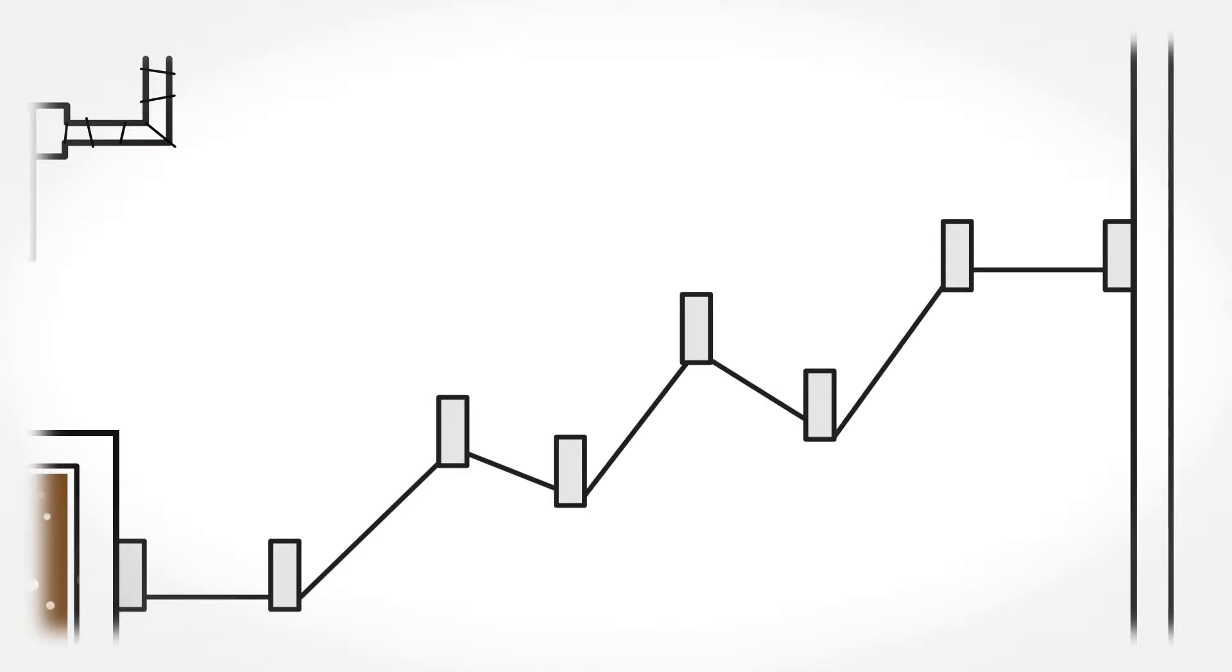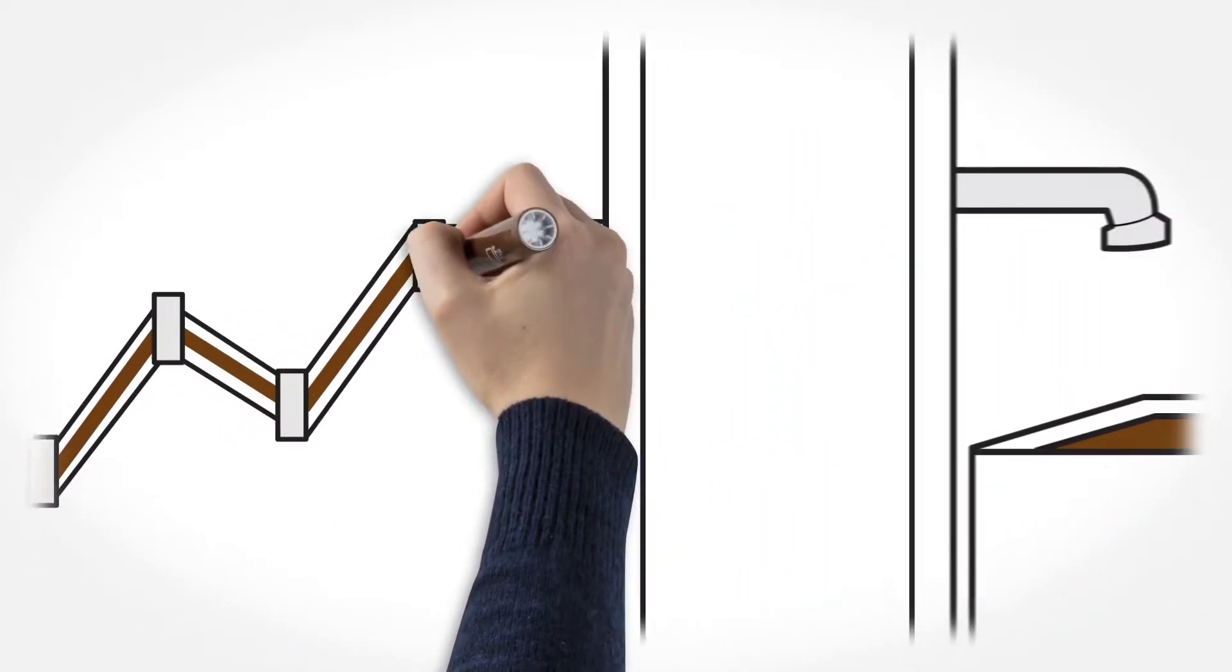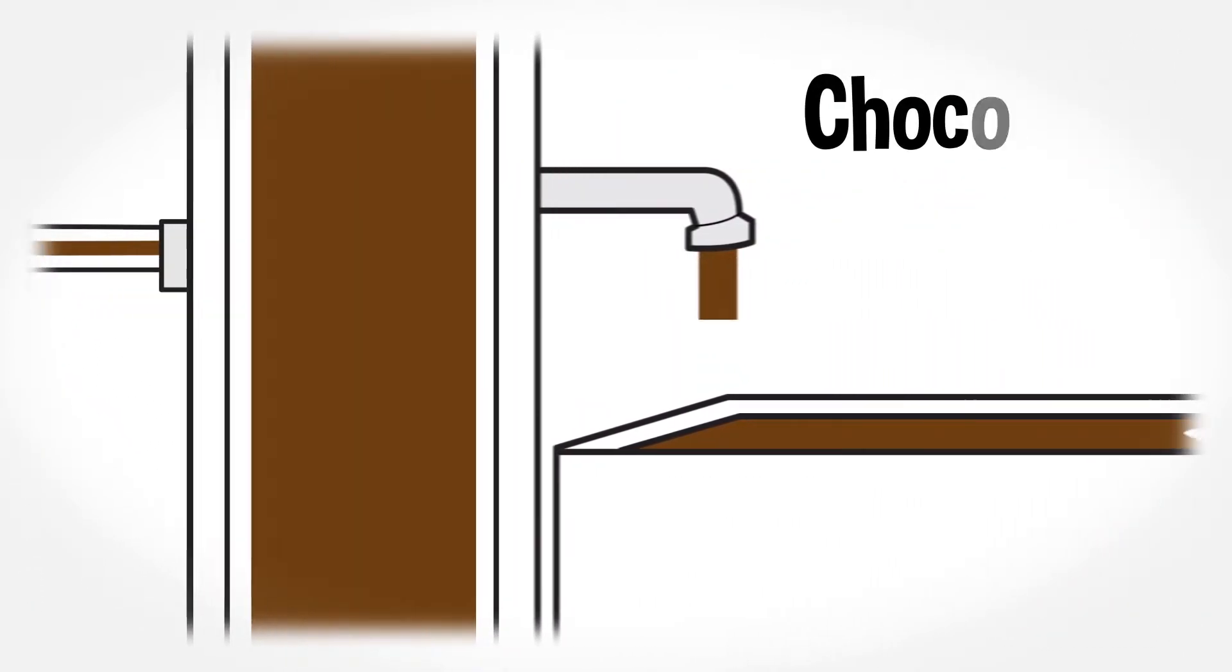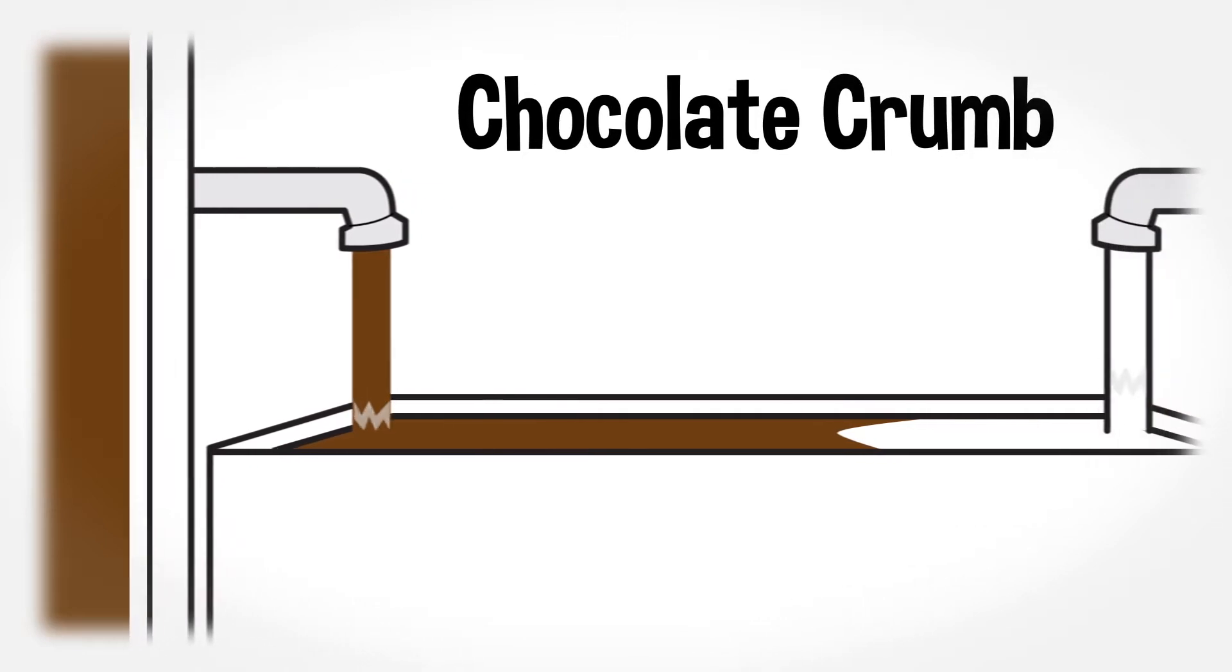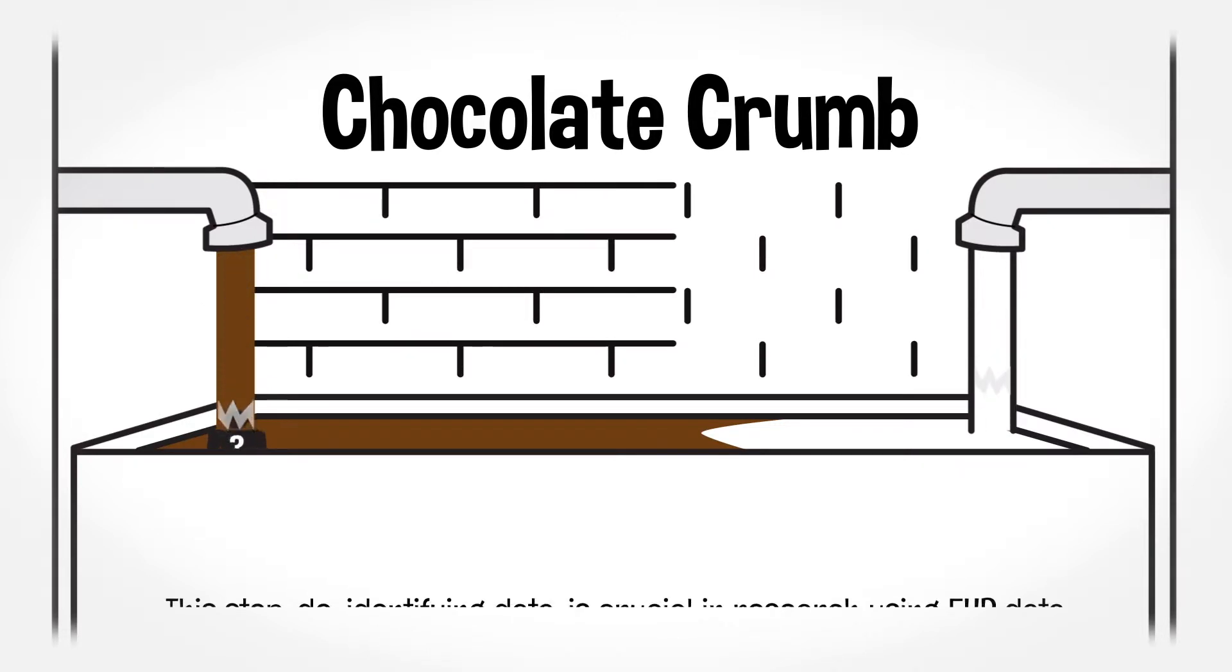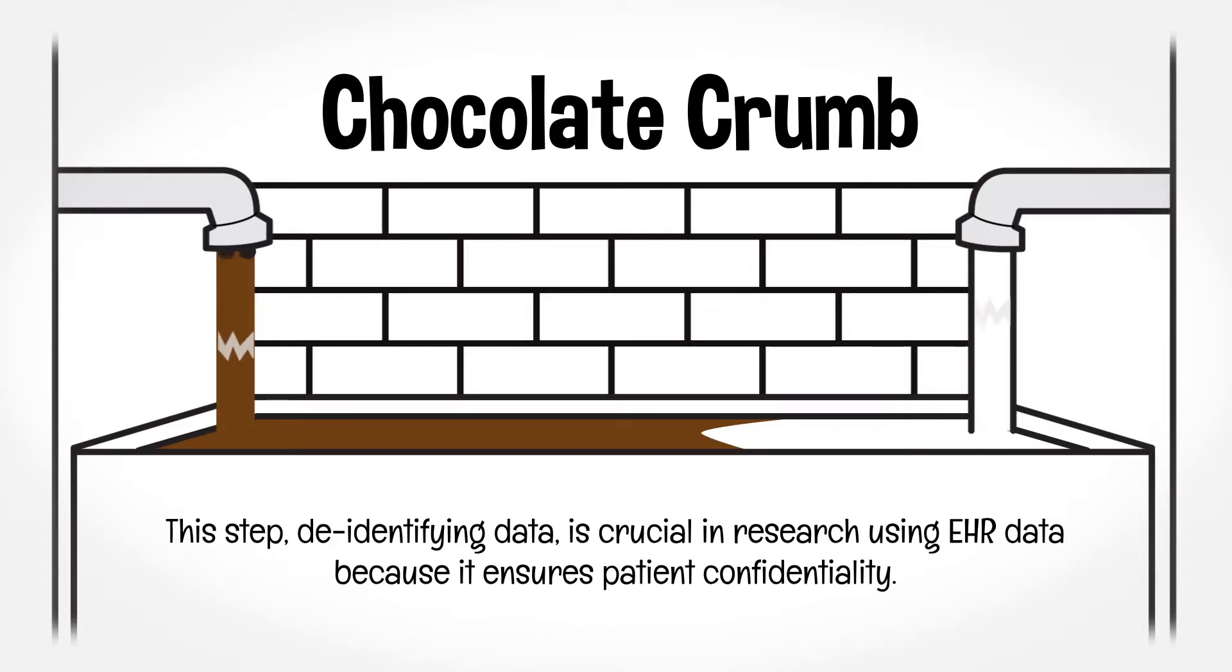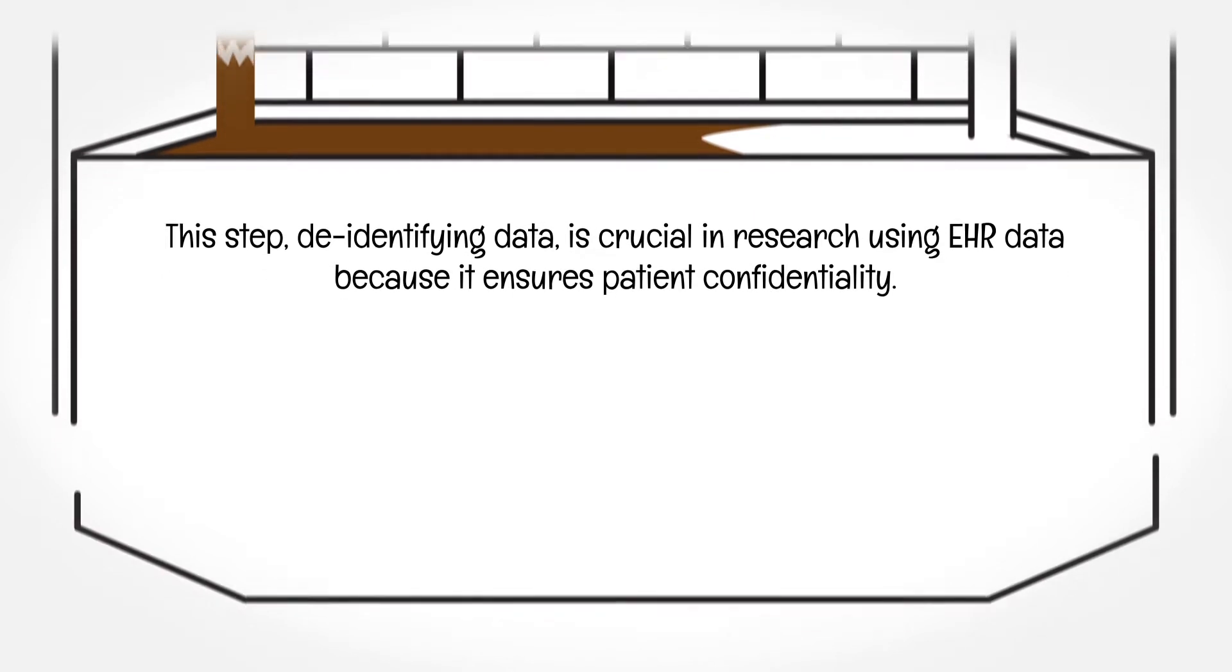Chocolate liqueur is next combined with milk and sugar to form chocolate crumb. Once the crumb is formed, there's no way to separate the individual nibs or, in our analogy, patients' EHRs. This makes it impossible to connect health information with a patient's identity before the data is stored and protected behind each network institution's firewall. This step, de-identifying data, is crucial in research using EHR data because it ensures patient confidentiality.